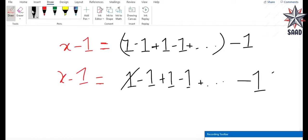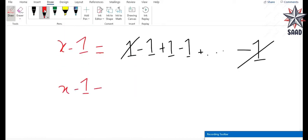Let's cancel this minus 1 and plus 1. So x minus 1 is equal to minus 1, so we remain with this part, minus 1, plus 1, minus 1 and so on till infinity.